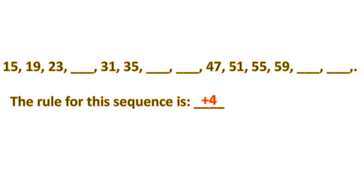Now we fill in the blanks. 23 plus 4 is 27, 27 plus 4 is 31. We add 4 to 35 to get 39, plus 4 is 43. For the remaining blanks, we add 4 to 59 to get 63, and 63 plus 4 is 67.